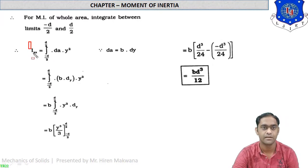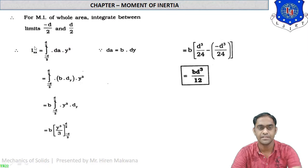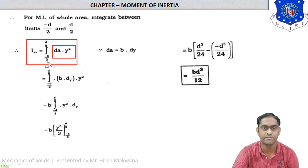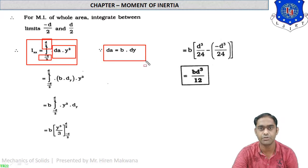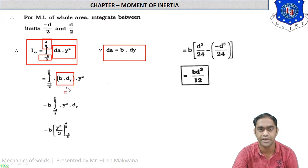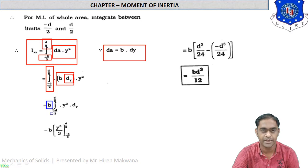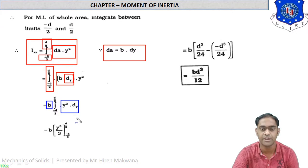The formula for Ixx is the integration of dA times y squared from minus d/2 to plus d/2, where dA equals b times dy. Replacing dA, the integral becomes b times y squared dy from minus d/2 to plus d/2. Since b is constant, it is taken out, and the integration of y squared gives y cubed by 3.